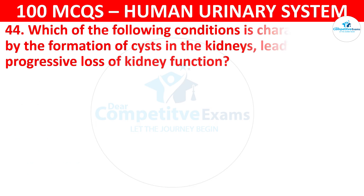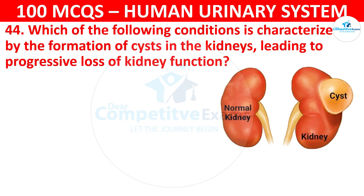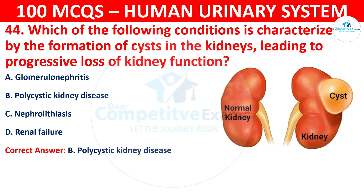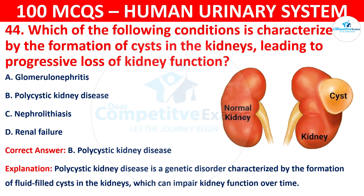Question 44: Which of the following conditions is characterized by the formation of cysts in the kidneys, leading to the progressive loss of kidney function? The options are: glomerulonephritis, polycystic kidney disease, nephrolithiasis, or renal failure. The correct answer is B, that is polycystic kidney disease. Polycystic kidney disease is a genetic disorder characterized by the formation of fluid-filled cysts in the kidneys, which can impair kidney function over time.